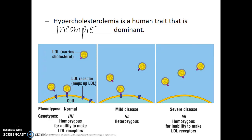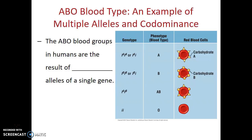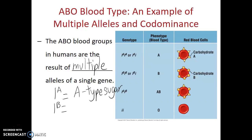What about genes in which there are more than two possible allele options? An example of this would be the I gene, which controls the ABO blood typing of human blood cells. The ABO blood groups in humans are the result of multiple alleles of a single gene. For the I gene, there are three alleles: capital IA is the allele that codes for the A type sugar on the red blood cells; capital IB is the allele that results in the B type sugar; and the little i allele is recessive to both, and it codes for no sugar on the red blood cells.